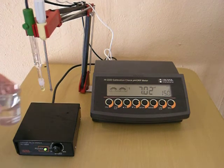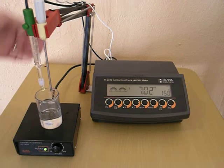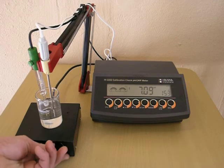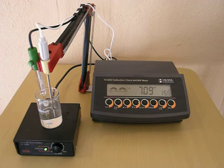I'm going to place pH buffer 7.01 on the stirrer. The stirrer bar is in place. And turn it on. Let the probe start to condition itself.